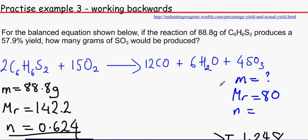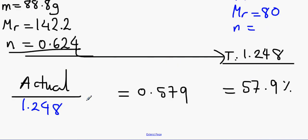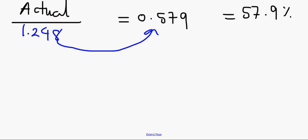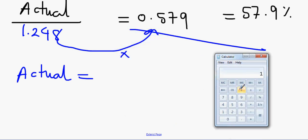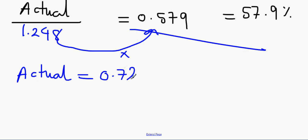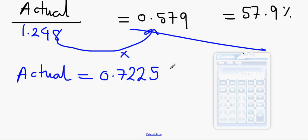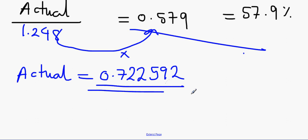But we can actually do this by - if we do maths, if we multiply 0.579 by 1.248 to get rid of this on that side - this is GCSE maths. So the actual will equal, let's just do that, 1.248 times 0.579, 0.722592. Okay, so that is our actual moles.